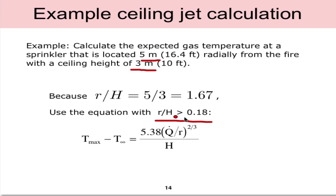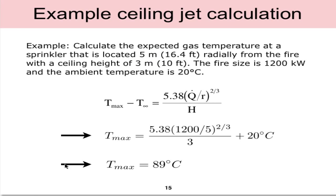If we plug in the values to that equation you can use a spreadsheet for this. In order to calculate the temperatures we need to know the fire size and the ambient temperature, so I've given those as 1.2 megawatts or 1200 kilowatts and an ambient temperature of 20 degrees celsius. If we plug in 1200 kilowatts, five meters radially r, and h equal to three...